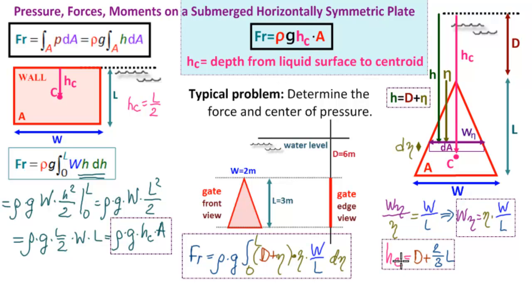Anyway, using this formula with this, we get this value for FR for the resultant force, rho G, D plus two-thirds of L, times A. What is the area? The area is equal to W times L over 2. W times L over 2. So we could calculate it using the integral, or we could calculate it using this formula, or we could calculate both ways to check our answer.